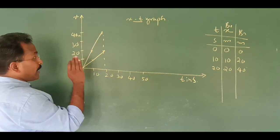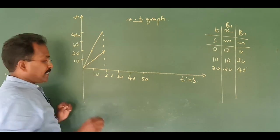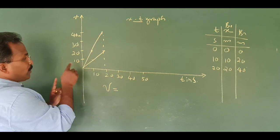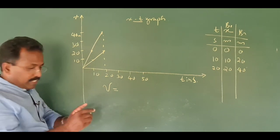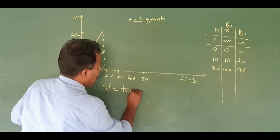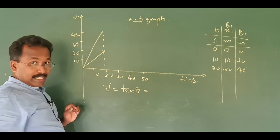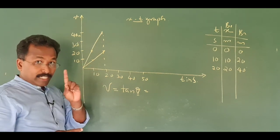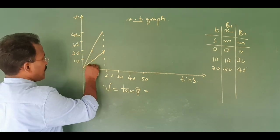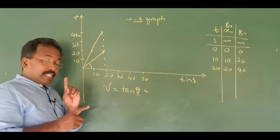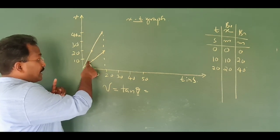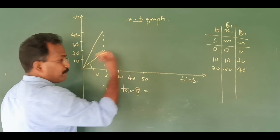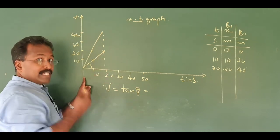You have studied that velocity v is equal to the slope of the position-time graph, which is equal to tan θ. This is the first key formula. Tan θ is the angle that the graph makes with the x-axis.